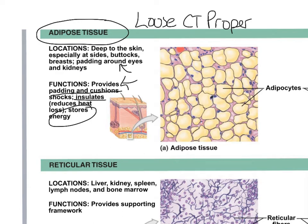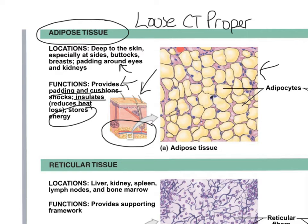We find adipose tissue below the skin and behind the eye — if you hit your head, at least your eyes are padded by fat. On the lab exam, you'd see this picture and identify it as adipose tissue. For lecture, you need to know its location and functions.